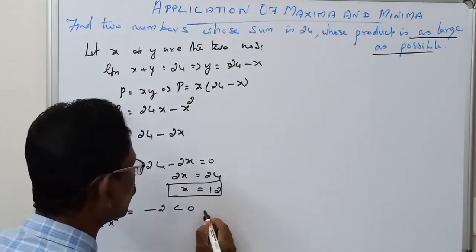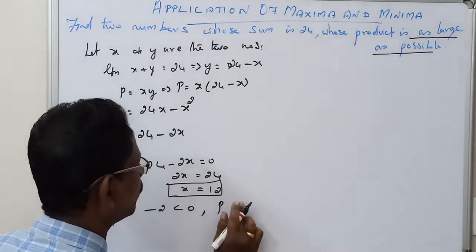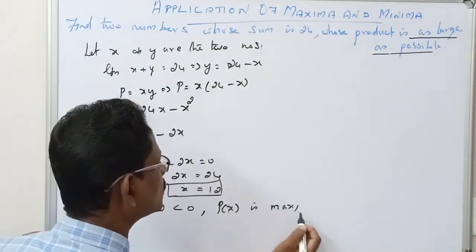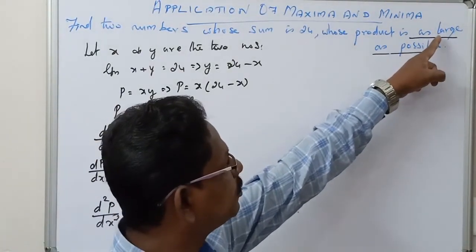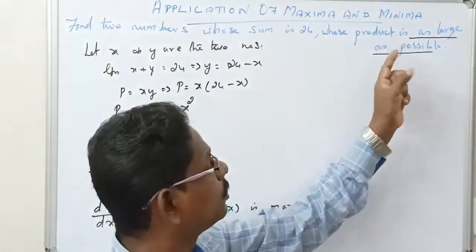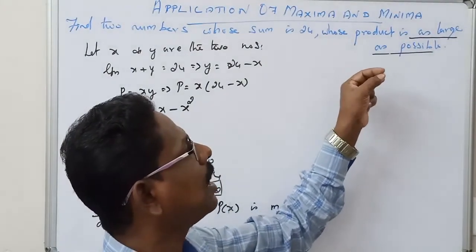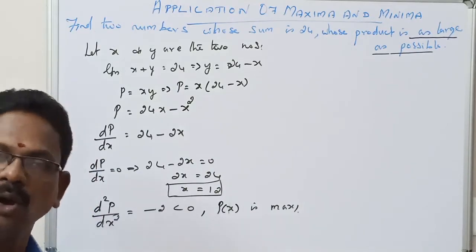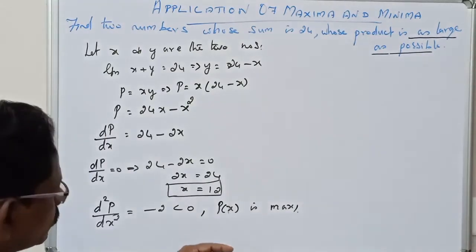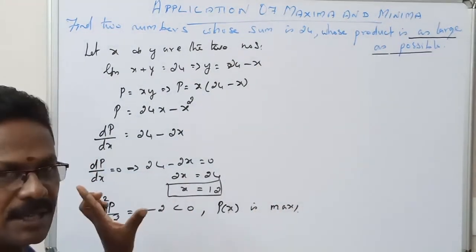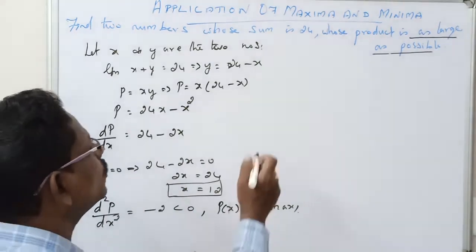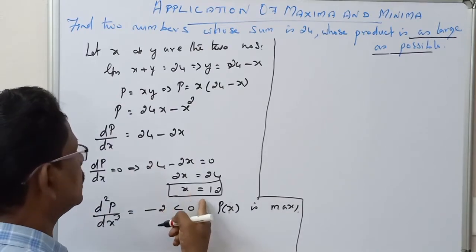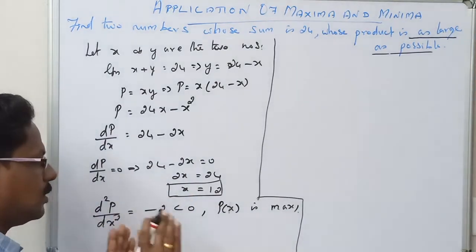Therefore P is maximum. The condition for maximum is that the second derivative is less than zero — if it were greater than zero, it would be a minimum. Since d²P/dx² equals minus 2, which is always less than zero, P is maximum.